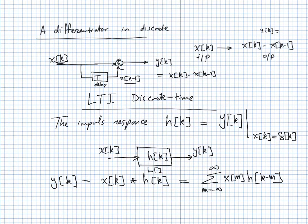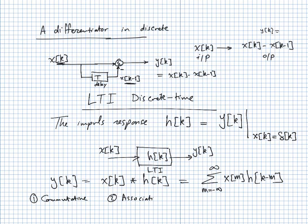The discrete convolution shares the same properties as continuous convolution: it is commutative, associative, and distributive.